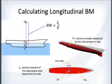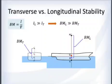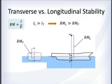Because the longitudinal moment of inertia is so much larger, the longitudinal BM is a lot larger than the transverse BM. Here is the ship shown with both the transverse and longitudinal versions — BM is calculated the same way, but the longitudinal value is far greater.